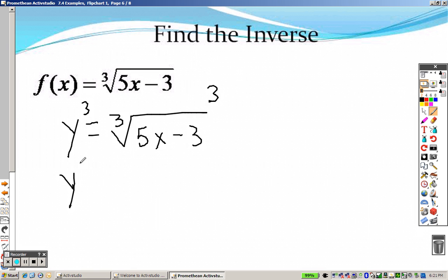So I get y cubed equals, those are gone, 5x minus 3. So to get rid of the x, I need to add 3 to both sides. So I add 3 to both sides. So now I have 5x equals 5x equals y cubed plus 3.